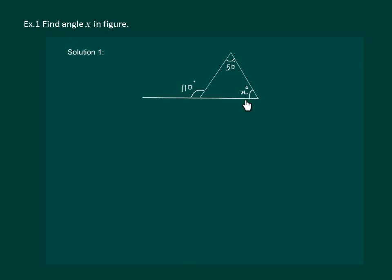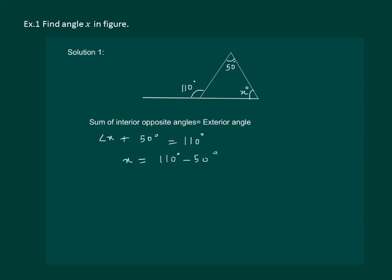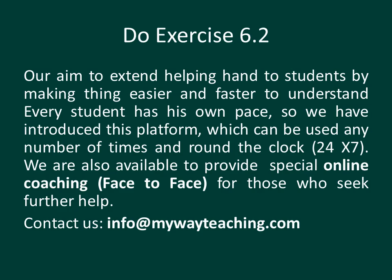Find angle X in the given figure. We know that the sum of interior opposite angles is equal to the exterior angle, so angle X plus 50 degrees should be equal to 110 degrees. Solving further, we get X equal to 110 minus 50, which is equal to 60 degrees. So angle X is equal to 60 degrees.